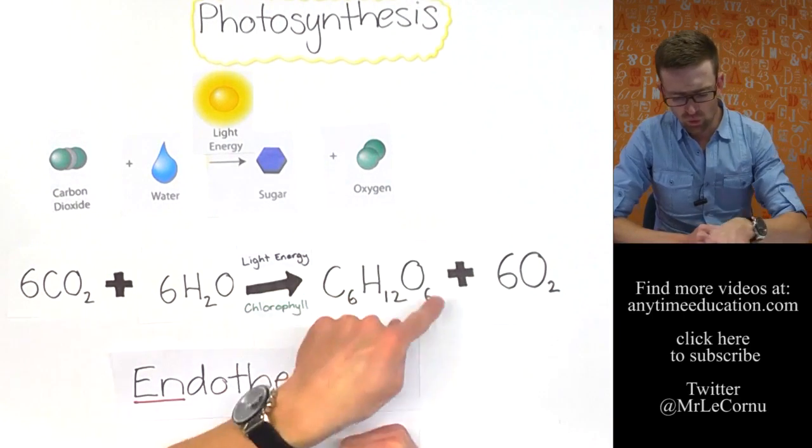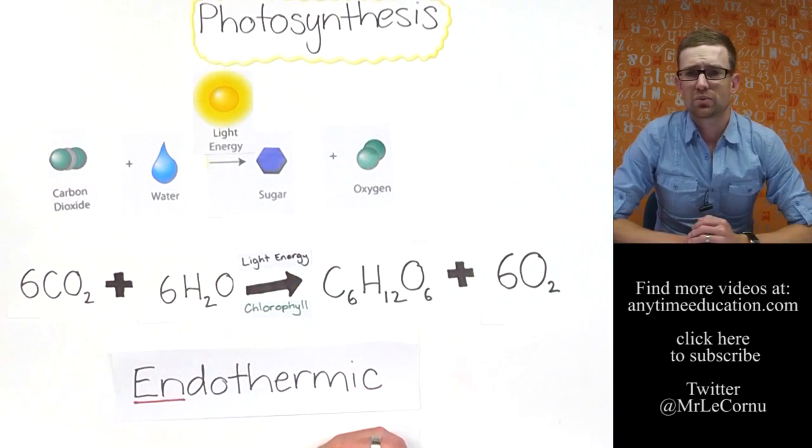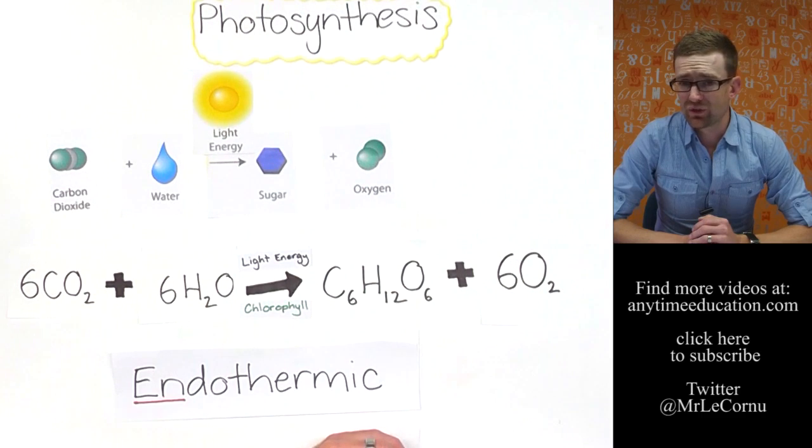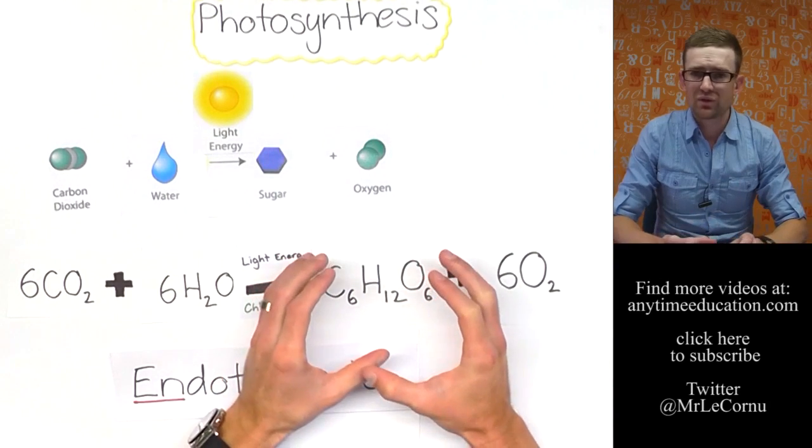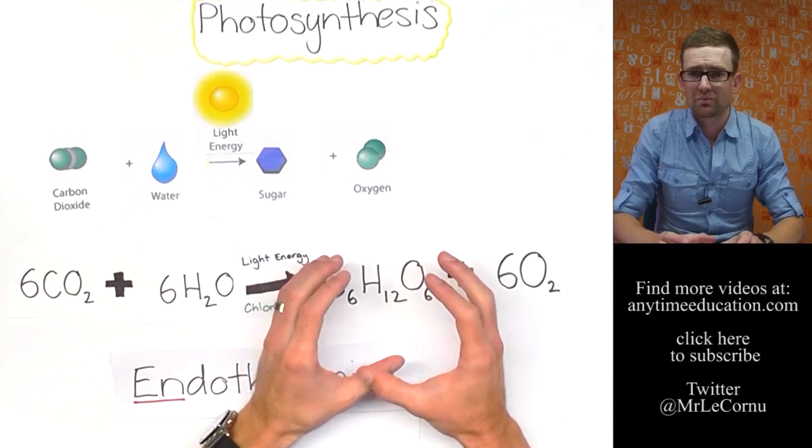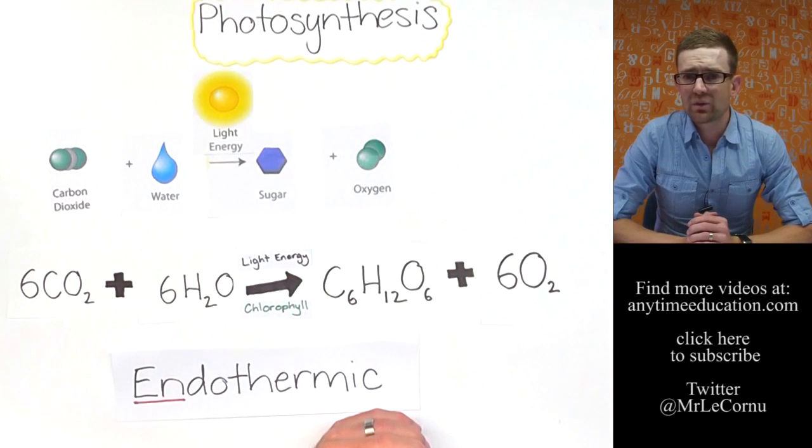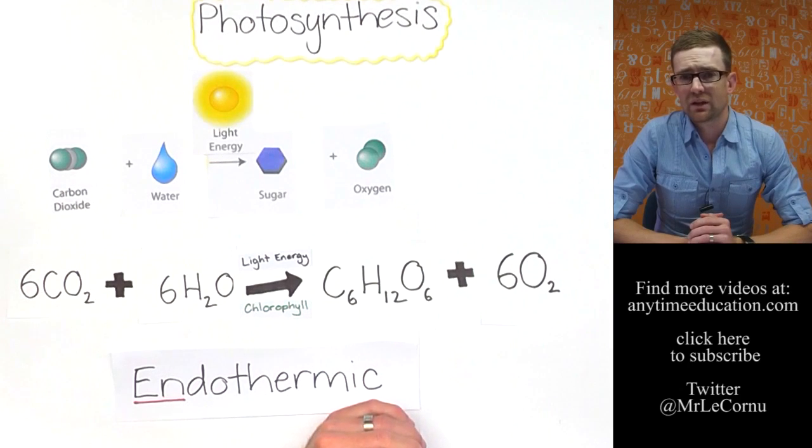Because all organisms use glucose in processes called aerobic respiration and fermentation. And they are the next two videos that you're going to want to check out. Because what we want to know now is once we've produced glucose or been able to obtain glucose, how do we then use it as an energy source? We need to break it down. We can either break it down in aerobic respiration or in fermentation. So check out the video called what is aerobic respiration and what is fermentation.